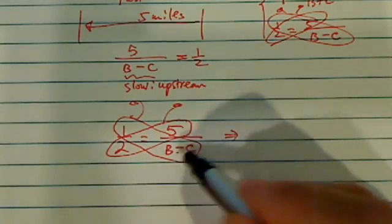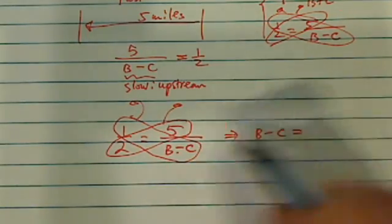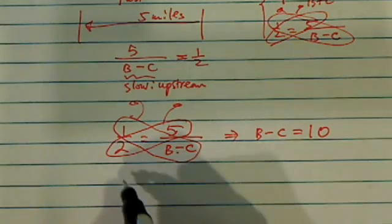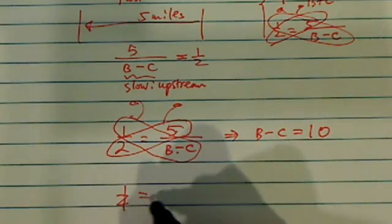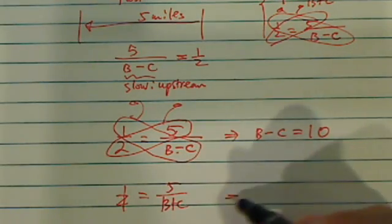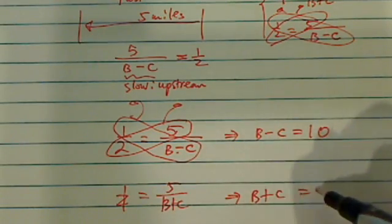Let's do the same thing for the other one. So here we have B plus C equals twenty.